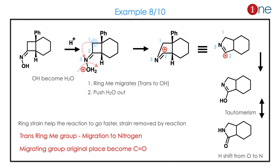Then again a fused system — a 4-member and 6-member ring with an oxime. The trans group is the ring methylene carbon. The ring strain is relieved during the reaction, giving a 5-member ring formation and finally an amide. So the 4-member ring becomes a 5-member ring by Beckmann rearrangement, and the reaction is feasible because ring strain drives it faster and is removed during the reaction.